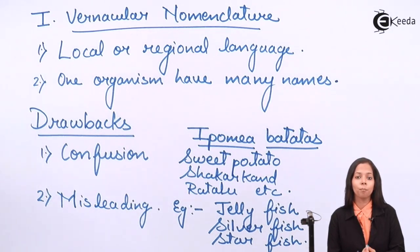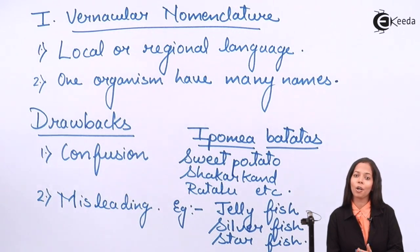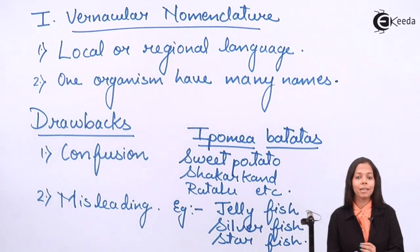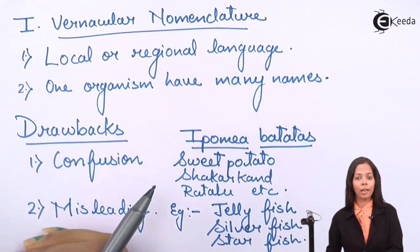Silverfish is found in books — when a book is kept in a library for a long time, the page color changes from white to brownish or yellowish because silverfish excrete waste products that turn the paper yellow. This concludes vernacular nomenclature. Because this system was not accepted worldwide, another system came into use: binomial nomenclature.